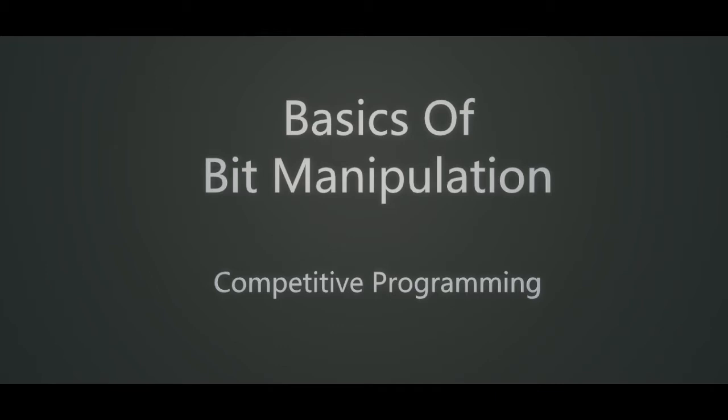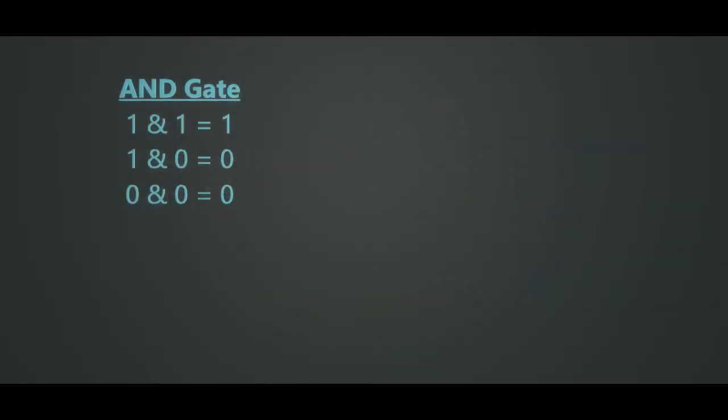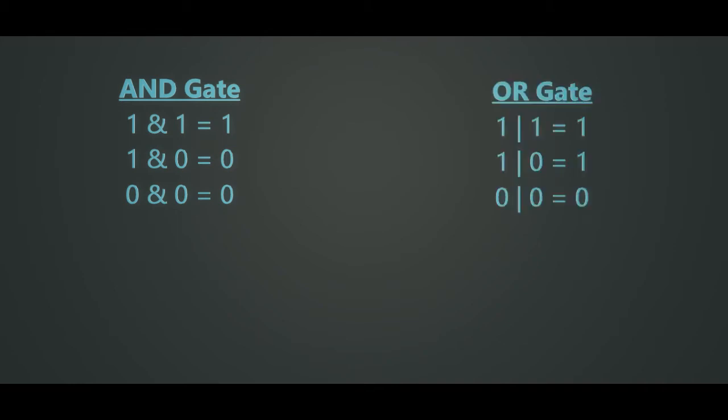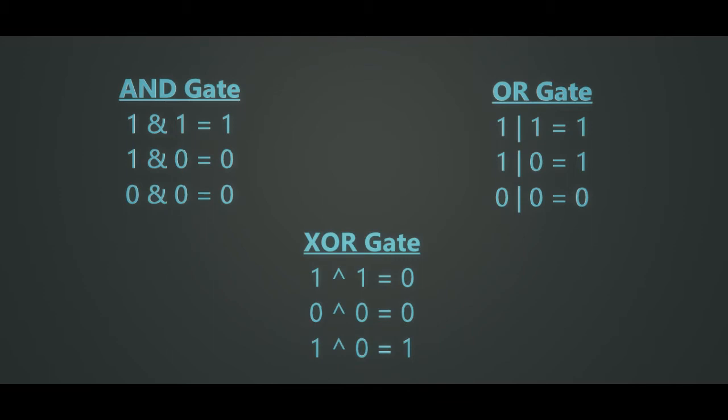I am pre-assuming that you are already aware about the working of the bitwise operators like the AND gate, OR gate, and XOR gate. As a revision: the AND gate results 1 if both inputs are 1; if at least one input is 0, then the AND gate results 0. For the OR gate, the output is 1 if at least one input is 1; if both inputs are 0, then the OR gate results 0. In the XOR gate, the output is 1 if both inputs are different; if both inputs are the same, then the output is 0.